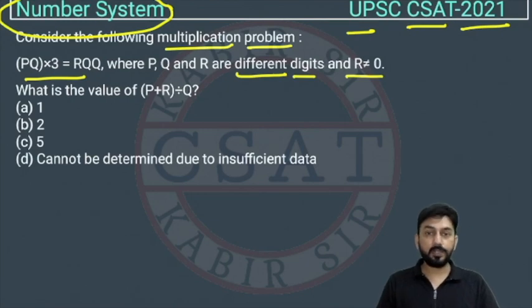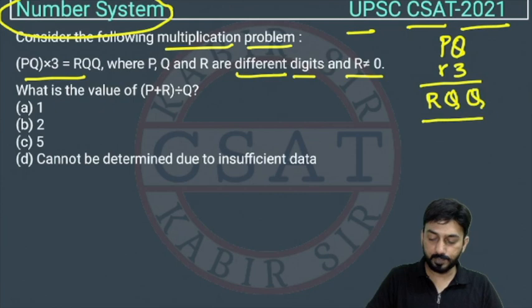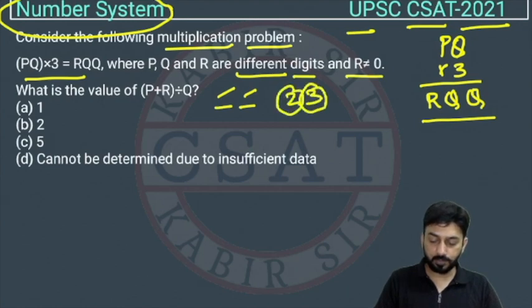This problem they have given where P, Q, R are different digits and R not equal to 0. So P, Q and R are different digits. We can write it like this is P, this is Q and we are multiplying it with 3, and we are getting R, Q and Q.